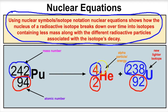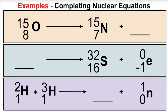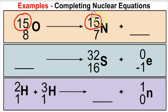Let's look at some examples where we fill in blank spots in nuclear equations. In the first example, we have a radioactive isotope of oxygen that decays to produce a new isotope of nitrogen — and we need to figure out what other particle is produced. The mass number on the left is 15, and on the right we already have 15 for the nitrogen isotope, so the missing particle must have a mass number of zero: 15 plus 0 equals 15.